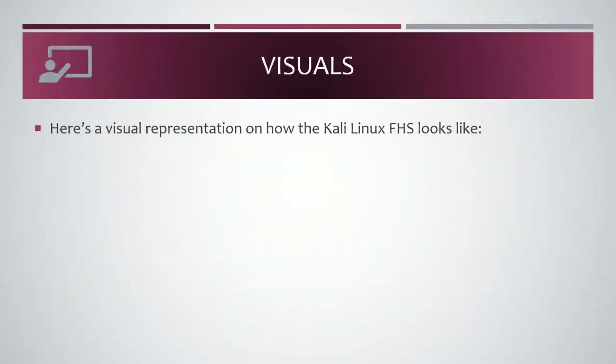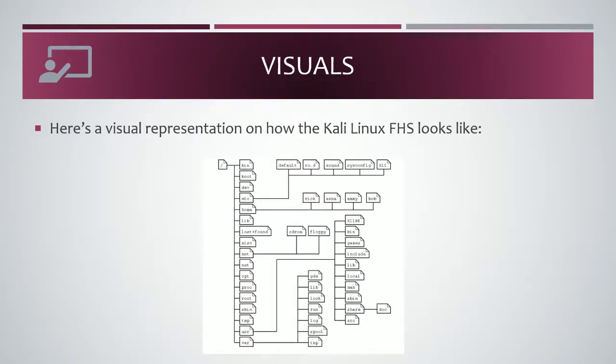Here's a visual representation of how the Kali Linux FHS looks like. You can see how it's built — there's the slash at the top, then all of the top-level directories are first in line. For instance, looking at ETC, all kinds of configuration files are stored in there, including the default rc.d, sysconfig, and x11. Under home, there are user directories. There's also MNT with temporary mount points such as cdrom and floppy. User applications are listed under USR, connecting to the var directory, which contains a list of variable data.